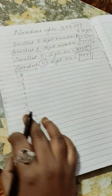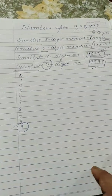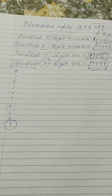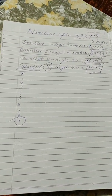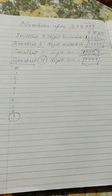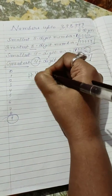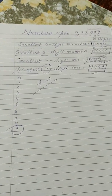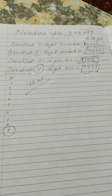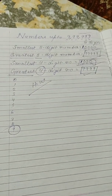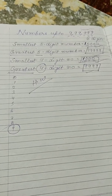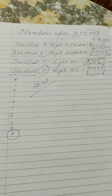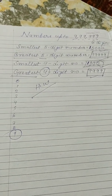Now students, you are able to answer all the questions. If someone will ask you smallest 9-digit number, smallest 4-digit number, smallest 10-digit number, greatest 10-digit number — you are able to write. So, your homework is to write the smallest 1-digit, 2-digit, till smallest 6-digit number. And just like that, write the greatest 1-digit, greatest 2-digit, greatest 3-digit, till greatest 6-digit number.